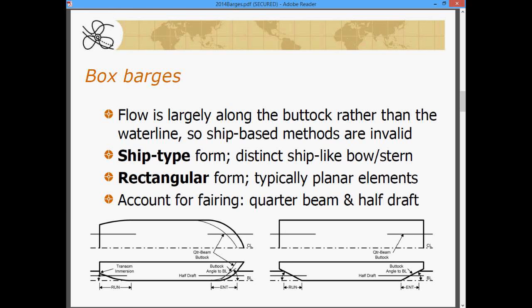And then we have a rectangular form made up of typically planar elements, a very rectangular plan form, and we have a raked bow and a raked stern. Sometimes the quarters will be fared a little bit.